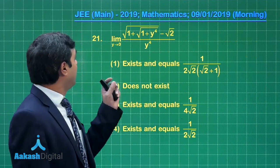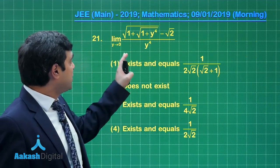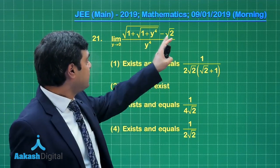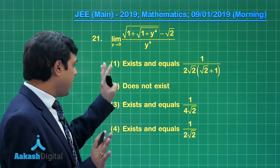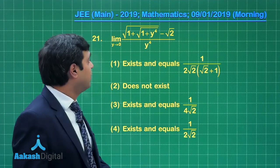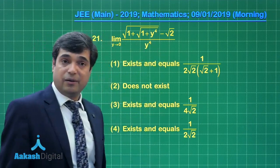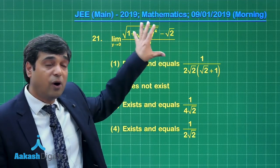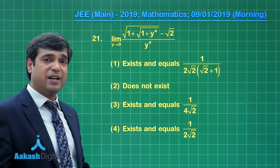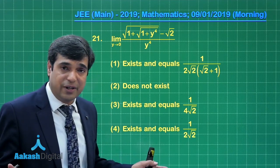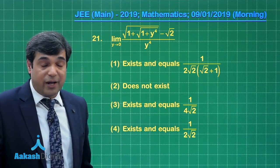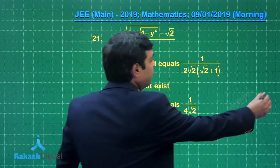Let us move on to the next one. Limit y approaching to 0: √(1 + √(1 + y⁴)) - √2 divided by y⁴. We have four options. We have to check whether it exists or not. If exists, what is the value of it? Since the powers are even and you can also see the terms involved inside the root sign are like 1+, so when y is approaching to 0 from positive or negative side, it is not going to affect the result. So limit exists. Now there is a possibility of approaching to infinite or minus infinite. Let us check out what is the limiting value for this question.